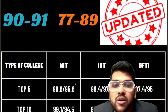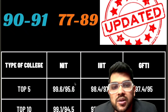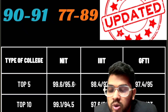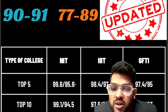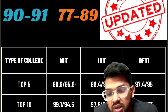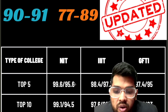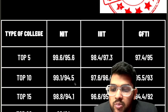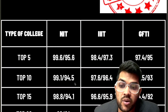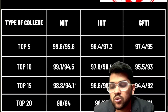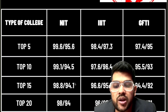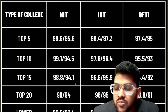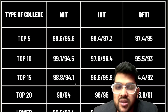For top 10 NITs: 99.1 for CSE and 94.5 for lower branch. For top 10 IIITs: 97.6 for CS and 96.4 for EC. For top 10 GFTIs: 95.5 for CS and 93 for lower. For top 50 NITs: 98.8 for CSE and 94.1 for lower. For top 50 IIITs: 96.6 for CS and 95.9 for lower. For top 50 GFTIs: 94.4 for CS and 92 for lower. For top 20 NITs: 98 for CSE and 94 for lower. For top 20 IIITs: 96 for CS and 95 for lower. For top 20 GFTIs: 93.8 for CS and 91 for lower.